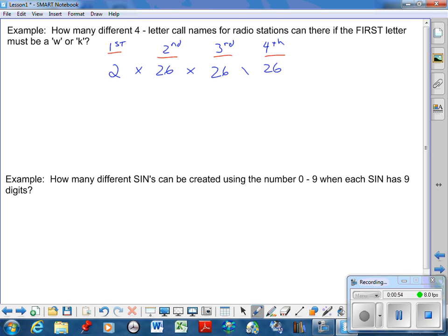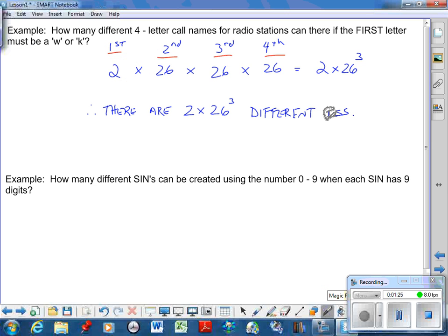They're all independent, doesn't matter what the previous letter was. I'm just going to leave it as 2 times 26 cubed, just because it's shorter and I don't have to go to my calculator. So therefore, there are 2 times 26 cubed different possibilities. I do need to see these headings if you're going to use the fundamental counting principle. Those headings keep it clear to me as to what you're doing.